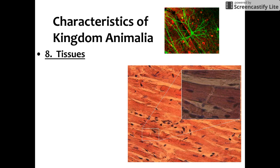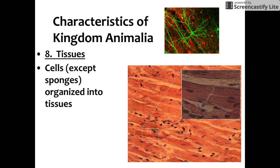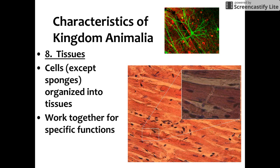Our eighth and final characteristic is that in all animals except sponges, cells are organized into tissues. Cells are organized in a complex way: lots of cells form tissues, tissues form organs, and organs form organ systems. All animals except sponges have at least tissues, which is a group of cells working together for a specific function, like transmitting a message or movement.